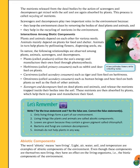So herbivores means only plant eaters, carnivores means flesh eaters, and omnivores means both — they eat plants as well as flesh, like human beings. Human beings jo hain woh plants bhi use karte hain aur flesh/meat bhi use karte hain. So these are the omnivores.